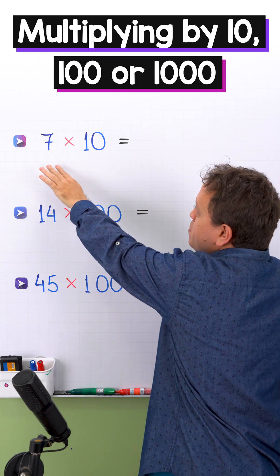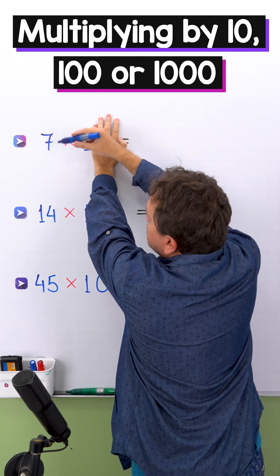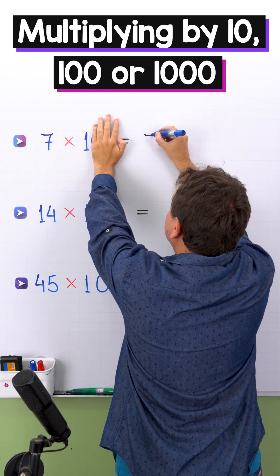In the first example, we're going to multiply 7 times 10. First, we're going to hide the 0 from the 10, and now we have 7 times 1. 7 times 1 equals 7.